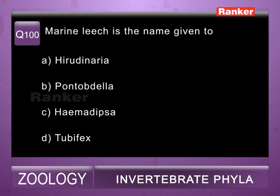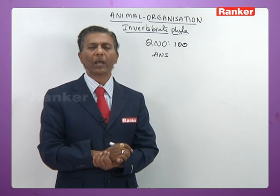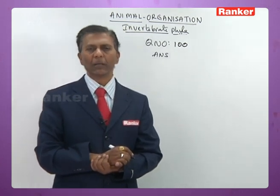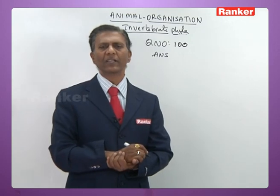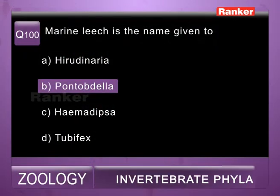Question one hundred: marine leech is a name given to — a) Hirudinaria, b) Pontobdella, c) Haemadipsa, d) Tubifex. Pontobdella is commonly called skate sucker — it is a marine leech. Haemadipsa is a land leech. Tubifex is a blood worm. So the answer for one-hundredth question is b) Pontobdella.